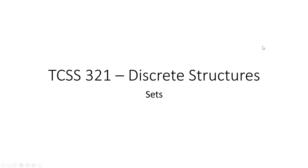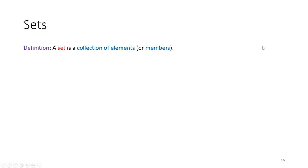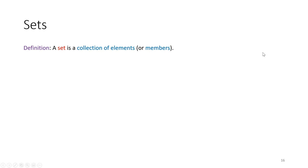So let's do that by taking a look at our first definition. A set is going to be a collection of elements or members. We sometimes call the elements members. Elements is the common term, but being a member of a set is usually the most important property — checking to see if something is a member or not.